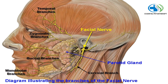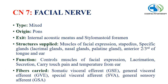The 7th cranial nerve is the facial nerve. It is a mixed type nerve which has its origin from the pons and exits through the internal acoustic meatus and stylomastoid foramen. The facial nerve is divided into five branches: temporal, zygomatic, buccal, mandibular and cervical branch. The structures supplied include the muscles of facial expression, stapedius, lacrimal glands, nasal glands, palatine glands, anterior two-thirds of the tongue and ear.